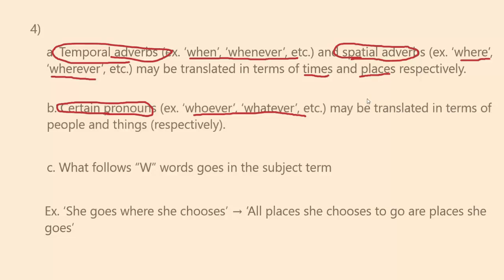For spatial adverbs, if I say 'wherever I walk, it rains,' we apply the same kind of translation. We have a similar phenomenon with pronouns such as 'whoever' and 'whatever.' So I can say 'whoever is my brother is my sibling,' and that can be translated as 'all people who are my brothers are people who are my siblings.'